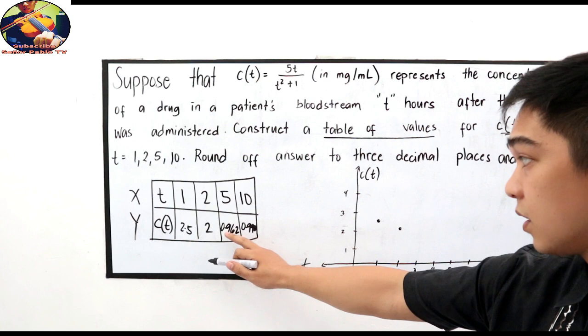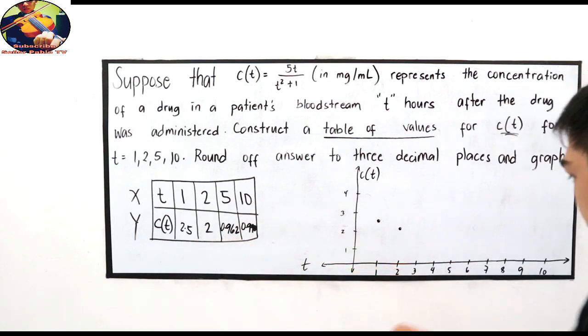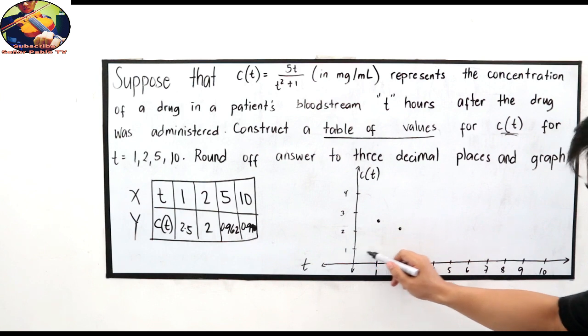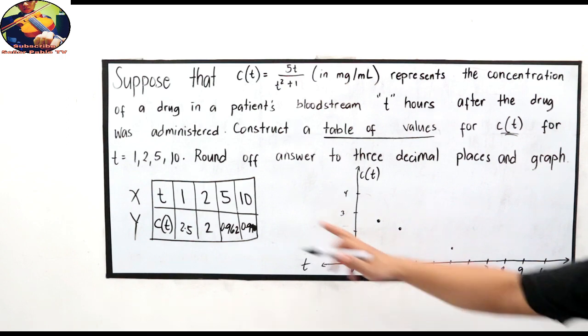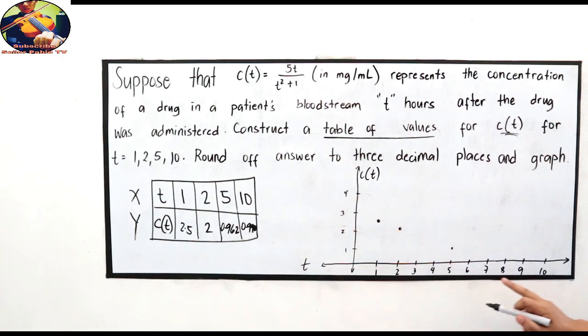When we have five, zero point sixty-two. Five, then zero point, before one, before this one. Here it is. When we have ten, also before one. So, there are our points now.